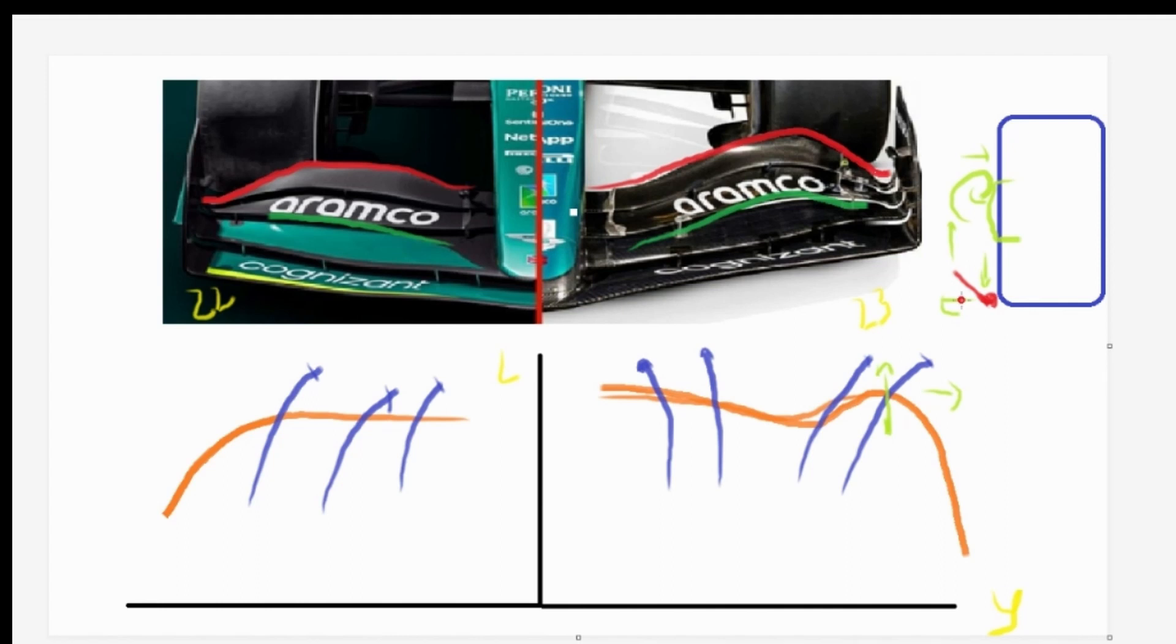Now the question comes down to: what can give you better squish management? The only way to get good squish management in this year's regulation, I think, is the front wing tip vortex. The front wing tip vortex needs to sit somewhere around here for you to get good squish management.